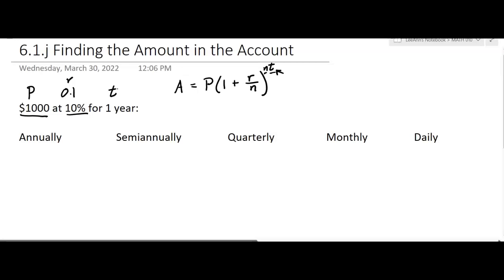What's going to change is N. We keep the P, the R, and the T the same. But N is going to keep changing. First we're going to do it annually. Annually means that N equals one, so we're just compounding it one time after a year.